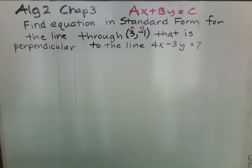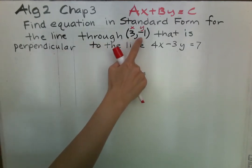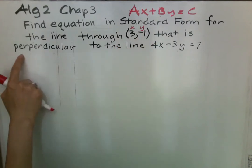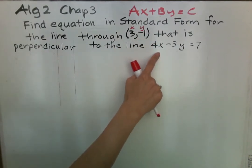All right, this is the second part to finding an equation in standard form for a line that passes through (3, negative 1) that is now perpendicular to the line 4x minus 3y equals 7.